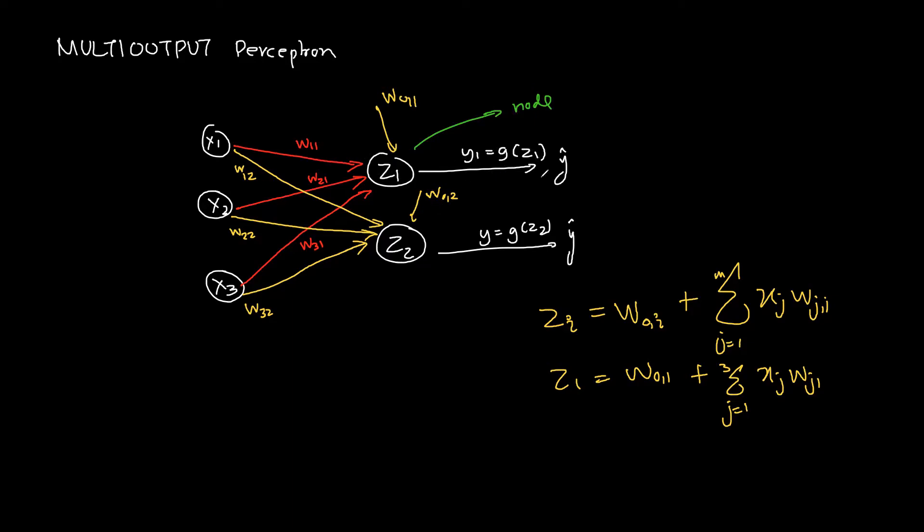So both of them are learning something and they are sort of independent of each other. If you see, after the summation I will get z1 and z2. I'll get two of those. z1 will be fed to g to get y1 and z2 will be fed to g to get y2. The g will still remain the same because that is my function.